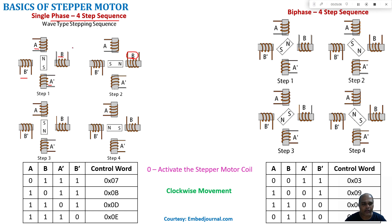The control words required to make a clockwise movement are shown in a table with coils A, B, A-dash, and B-dash. The coil gets excited when we give it a zero — the supply is given directly to the common terminal. In the four-step single-phase sequence: step 1 excites coil A, step 2 excites coil B, step 3 excites A-dash, and step 4 excites B-dash. This is the control word to rotate the motor clockwise. For anticlockwise direction, the excitation order is reversed: A, then B-dash, then A-dash, and then B.